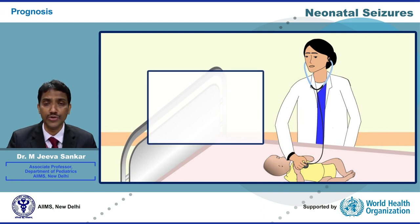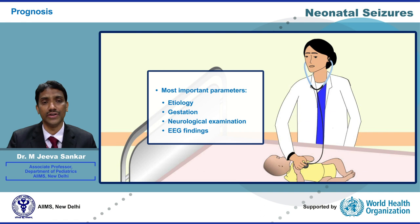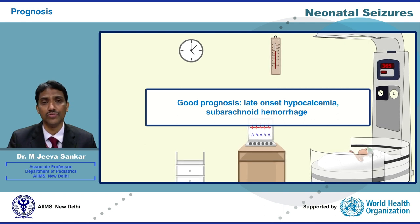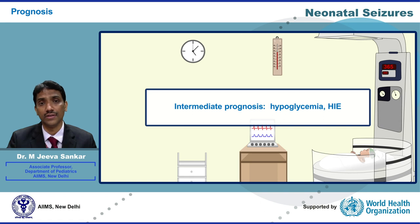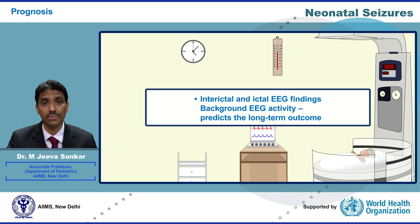The prognosis in a neonate with seizures depends upon the etiology of seizures, gestational age, neurological examination at discharge, and EEG findings. Late-onset hypocalcemia and subarachnoid hemorrhage have very good prognosis. Conditions like hypoglycemia and hypoxic ischemic encephalopathy have intermediate prognosis depending on severity of the insult, while developmental defects of the central nervous system have uniformly bad prognosis. Overall, prognosis is worse in preterm than in term neonates. EEG background activity is a very reliable predictor of long-term outcome, as is abnormal neurological examination at discharge.